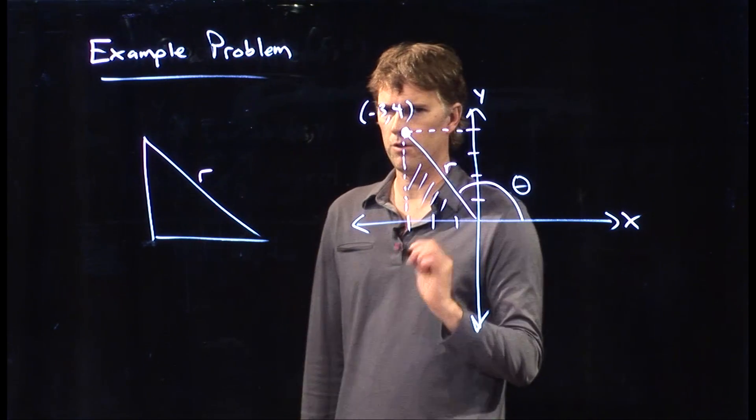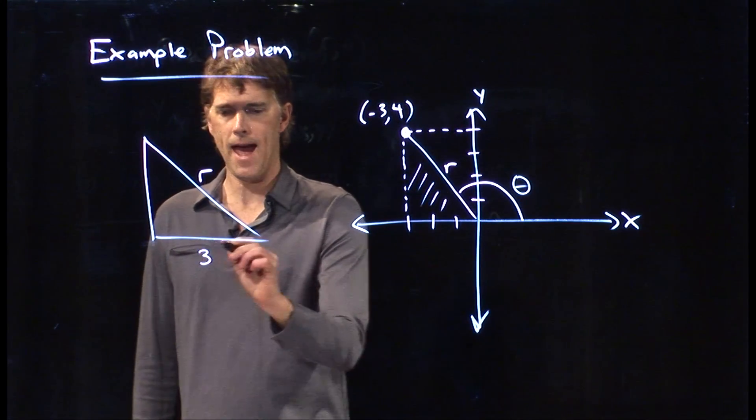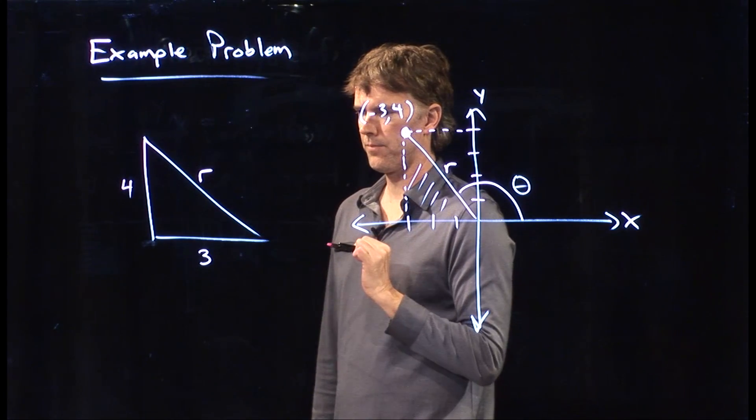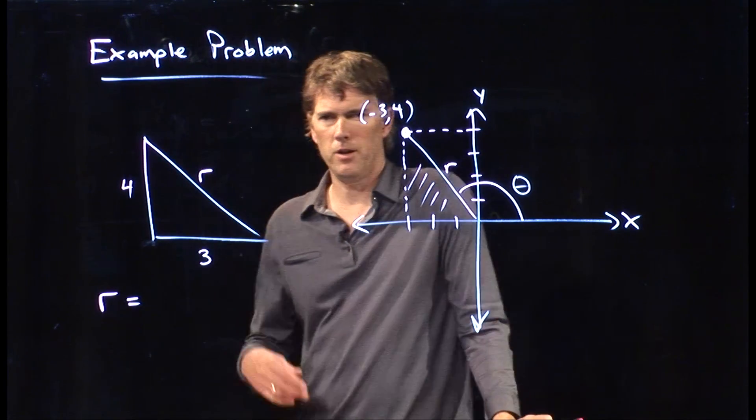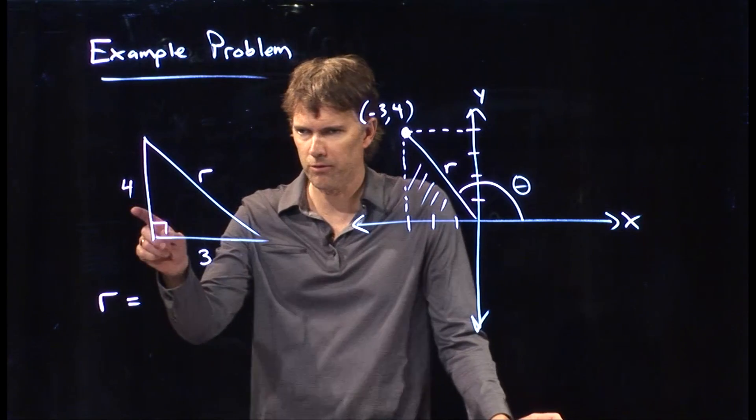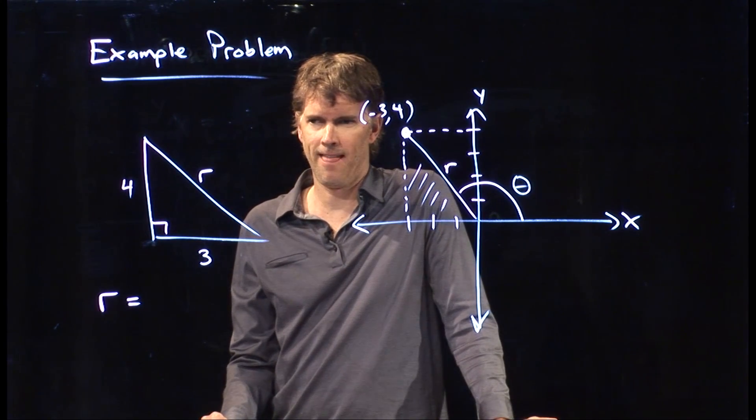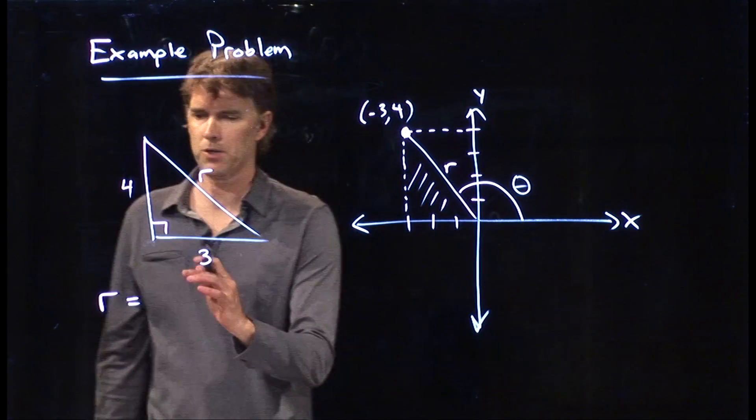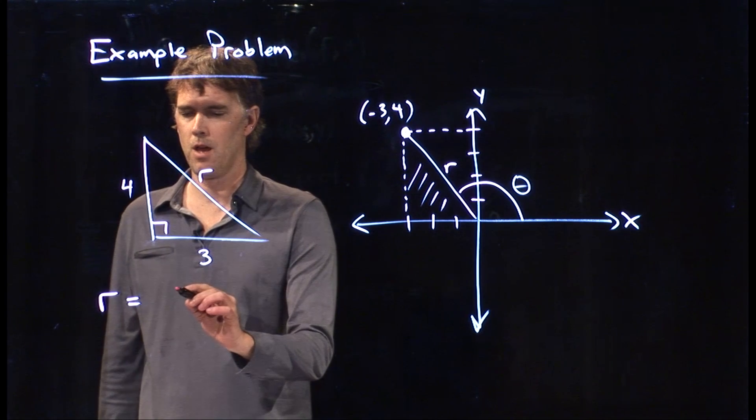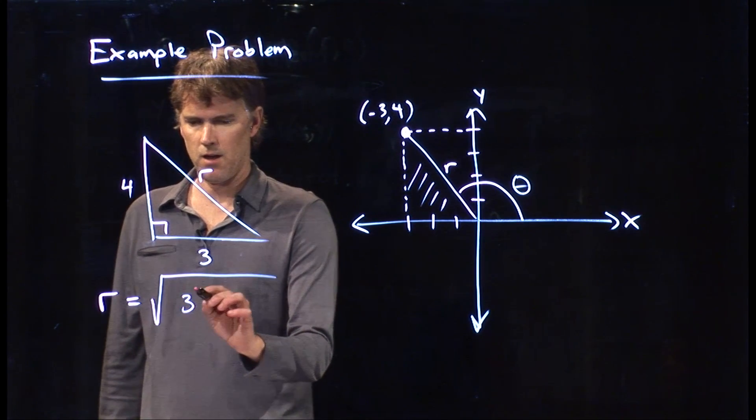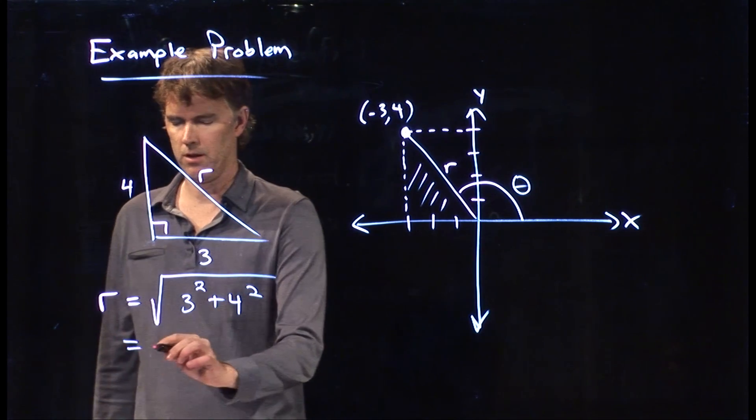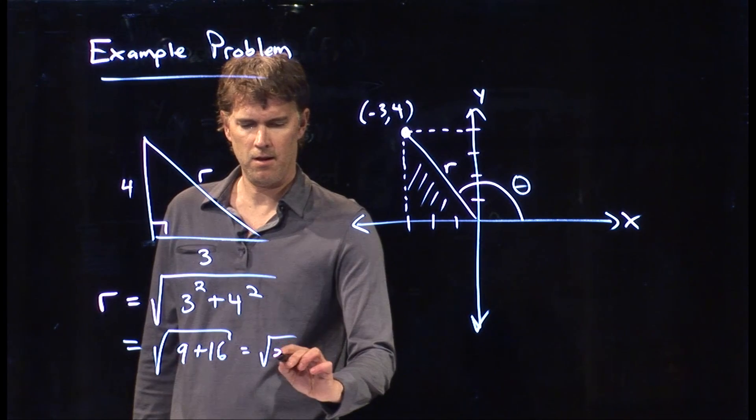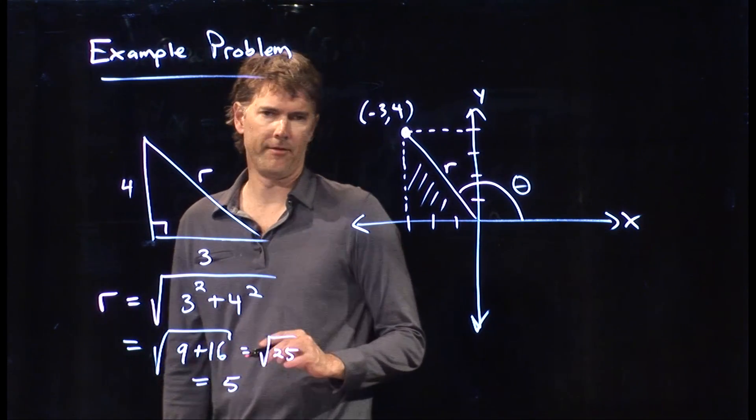The hypotenuse of the triangle is r. The bottom of the triangle has a magnitude of 3. We know it's negative, but it has a magnitude of 3. And we know that the vertical side is 4. So what does r have to be equal to? Anybody heard of a right triangle that starts with a 3 and then goes to a 4? Five. It's a 3, 4, 5 triangle. That's one of those special right triangles. Let's just convince ourselves that that is true. r is equal to the square root of 3 squared plus 4 squared, which is the square root of 9 plus 16. 9 plus 16 is equal to 25. And the square root of 25 is, of course, 5.